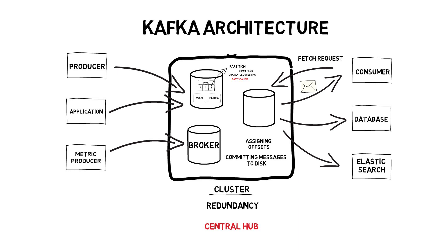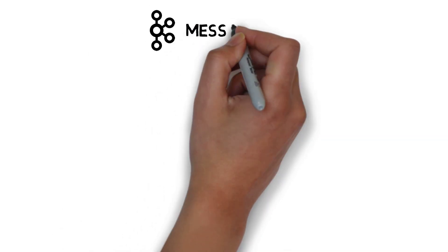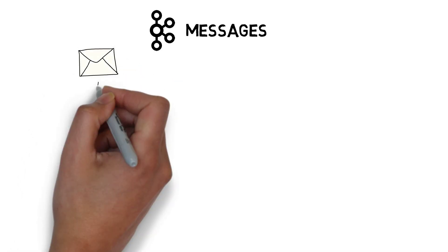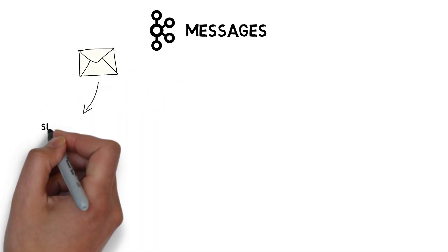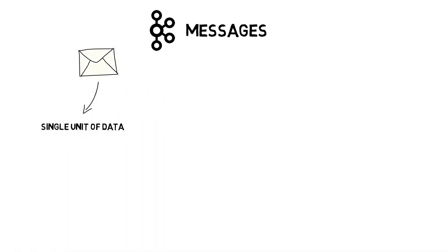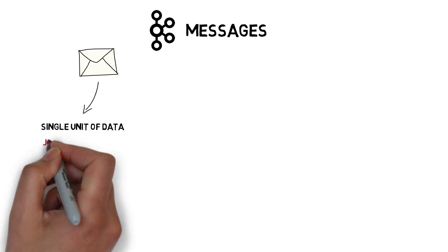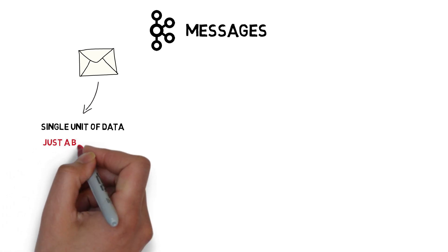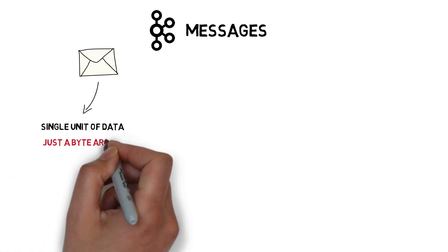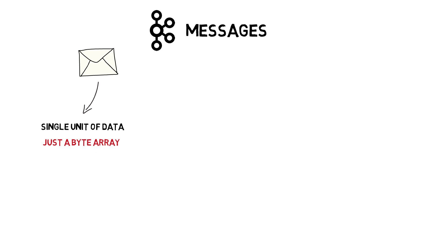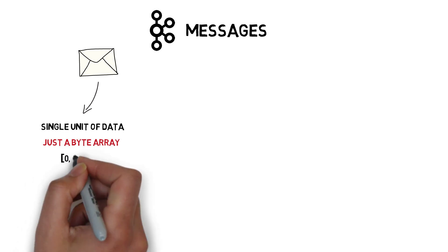Now let's jump into the nitty-gritty details. In Kafka, a message is a single unit of data that can be sent or received. As far as Kafka is concerned, a message is just a byte array, so the data doesn't have any special meaning to Kafka.